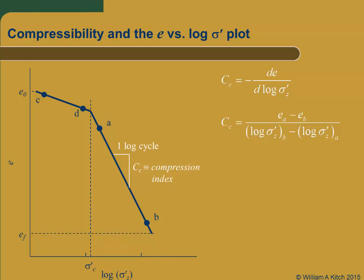Using points A and B to compute C sub c as the slope of the virgin curve, C sub c is the void ratio at A minus the void ratio at B, divided by the log of the effective stress at B minus the log of the effective stress at A. We use E sub A minus E sub B in the numerator to account for the negative sign. Since log of B minus log of A equals log of B over A, we can rewrite the compression index as E sub A minus E sub B over the log of the effective stress at B divided by the effective stress at A.